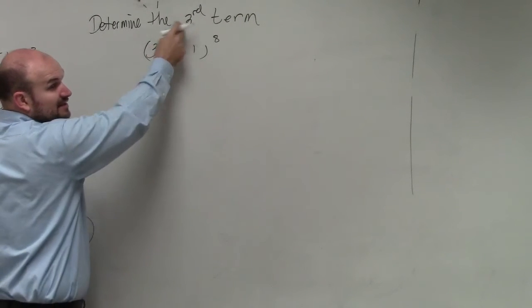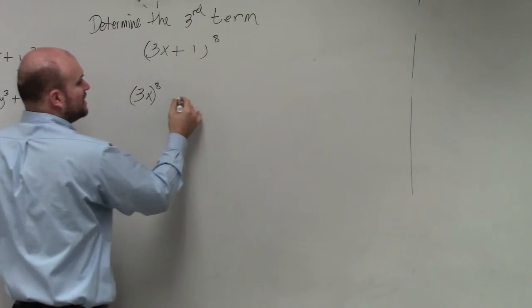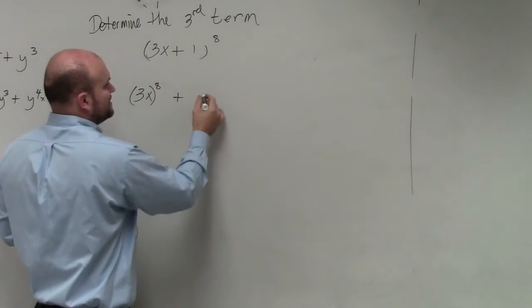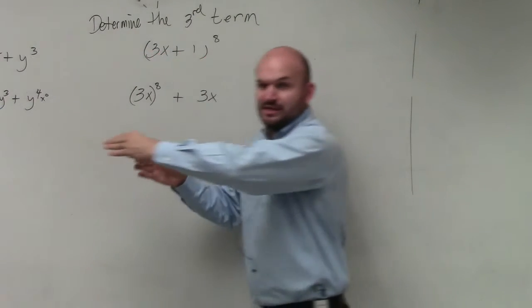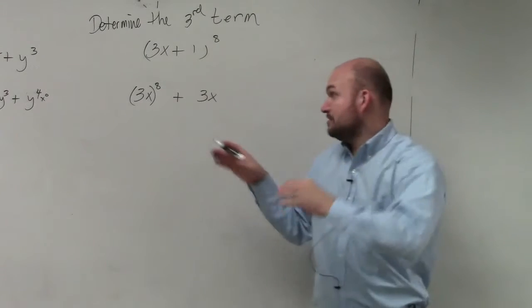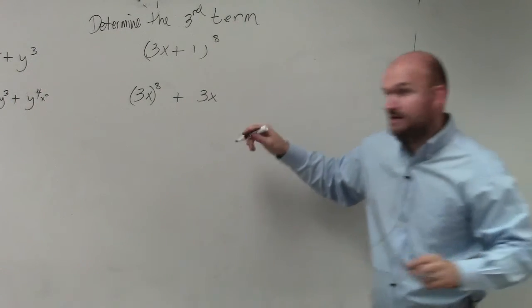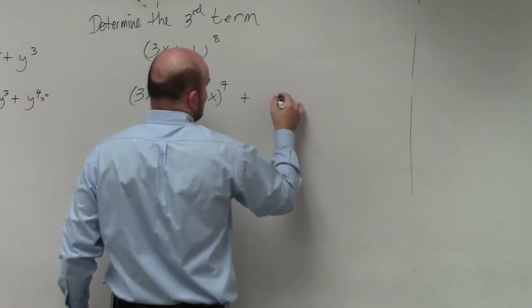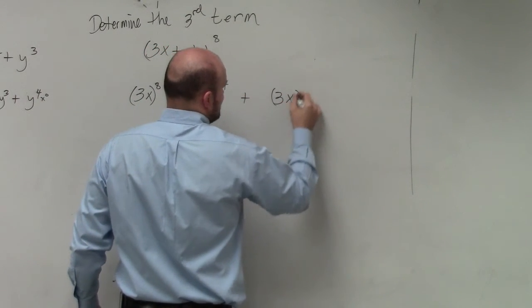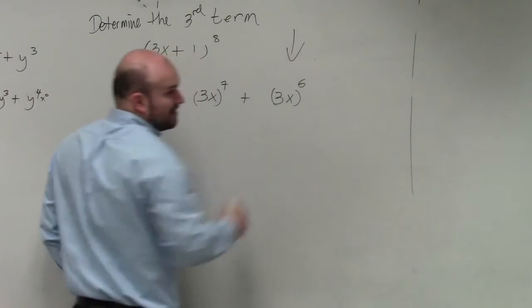Then we know the next, now remember, we're trying to find the third term. So the next term is going to be 3x to the, what happens in that first term? It goes in descending order. So the next one is going to be 3x to the seventh. So therefore, my third term is going to be 3x to the sixth power. And again, remember, this is what we're looking for, right? That's our answer.